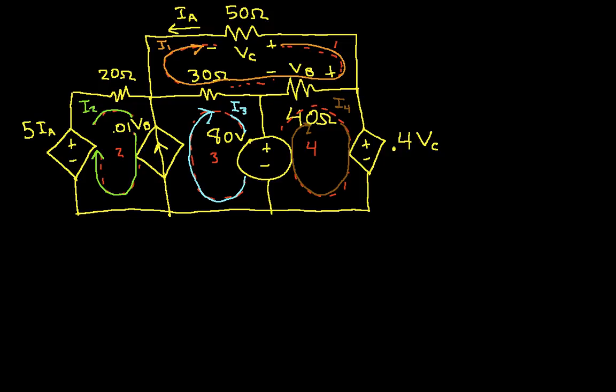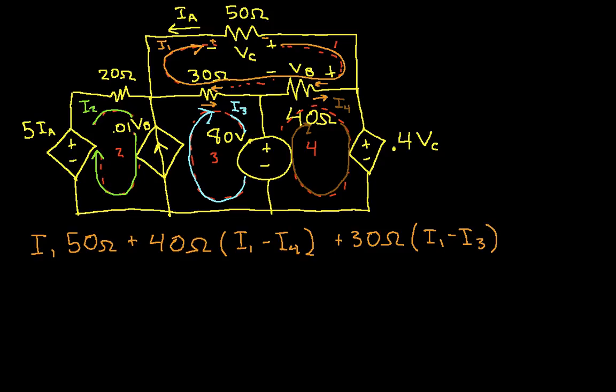So we have, starting here, we have I1 going through the 50 ohm resistor. So we'll have I1 times 50 ohms, plus we have I1 going this way through the resistor, I4 going this way through the resistor, and we're coming at it from right to left. So we'll have 40 ohms times I1 minus I4, and we have I1 going this direction through the 30 ohm resistor, and I3 going this direction. So we'll have plus 30 ohms, I1 minus I3, and we haven't encountered any voltage sources, so this is all equal to 0.